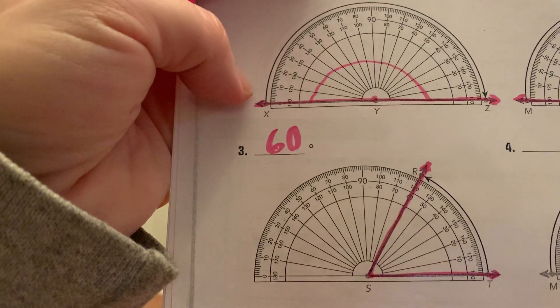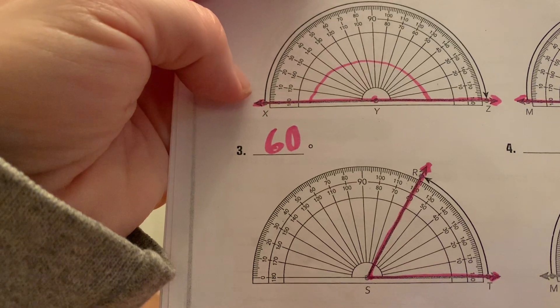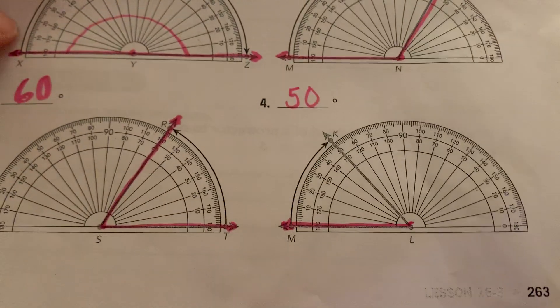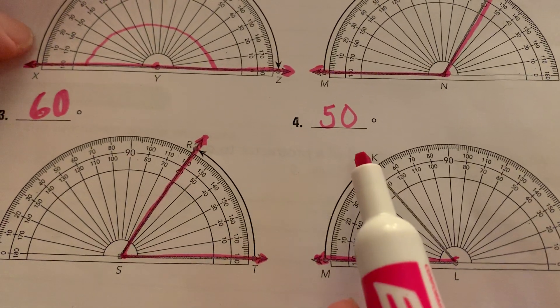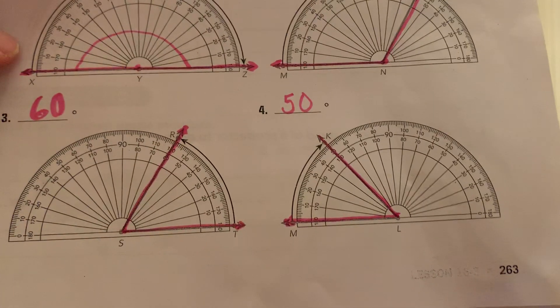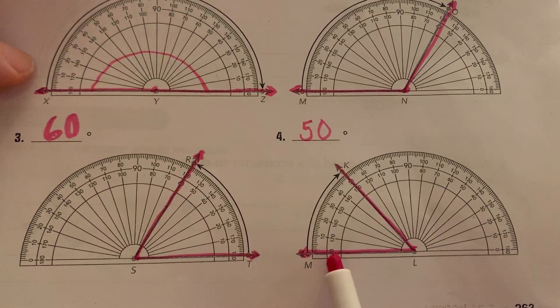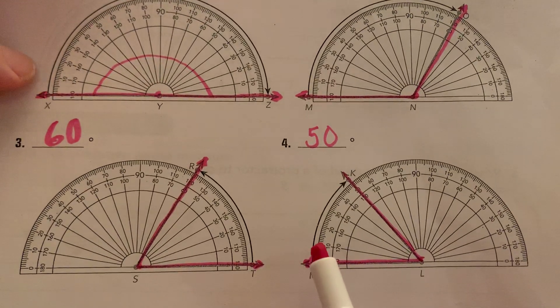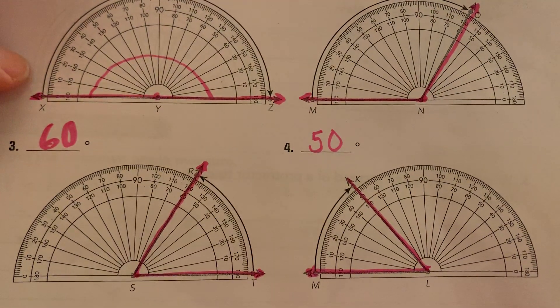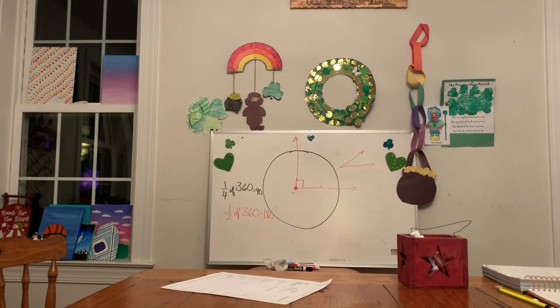Number four — we're starting with ray LM and counting up to ray LK. There's my bottom ray LM; I'm counting up to LK. Start at zero — not at 180 — and count up: 0, 10, 20, 30, 40, 50. This is a 50-degree angle.